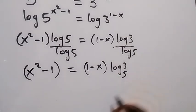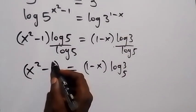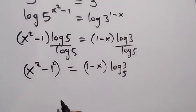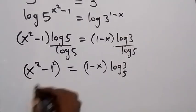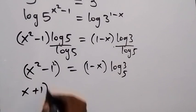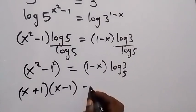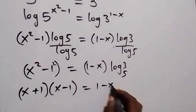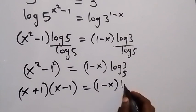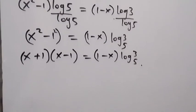From here, x squared minus 1 is the same as 1 squared minus 1, so applying the difference of two squares we can factor this as (x plus 1) multiplied by (x minus 1), times log 3 to base 5. We can now take everything to one side.